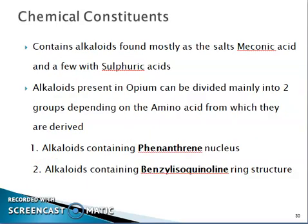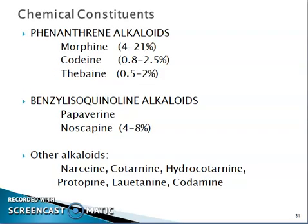Chemical constituents: opium contains alkaloids found mostly as salts of meconic acid, and a few with sulfuric acid. These alkaloids are divided into two groups based on their amino acid origin. Phenanthrene alkaloids include morphine (4–21%), codeine (0.8–2.5%), and thebaine (0.5–2%). Benzylisoquinoline alkaloids include papaverine and noscapine. Other alkaloids are narceine, cotarnine, and hydrocotarnine.